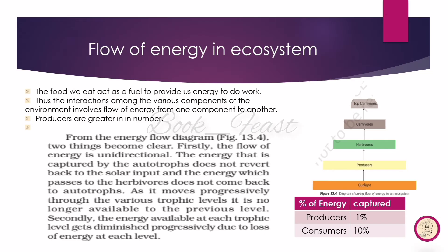The flow of energy in the ecosystem goes from producers — using sunlight — to consumers at each level. Every organism is interconnected. The flow of energy is unidirectional, meaning energy moves in only one direction through the ecosystem and cannot be recycled back.